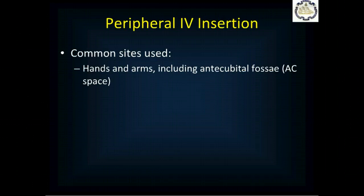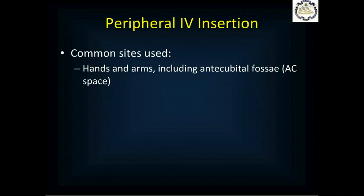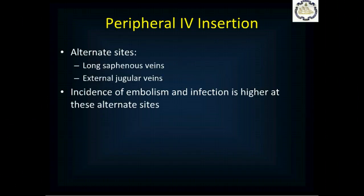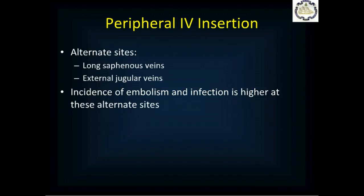We start on the arm, beginning low and working up. You put your tourniquet on, look at the hand first, then the forearm, then move up to the antecubital fossa at the elbow where you tend to find a larger vein. If you can't get into the arm, consider the long saphenous veins in the leg or the external jugular veins on the outside of the neck. However, infection and blood clots are much higher at those sites, particularly the legs, so we tend to stay away from them unless absolutely necessary.